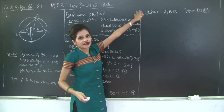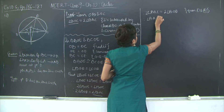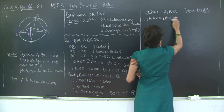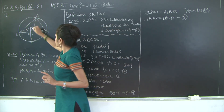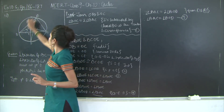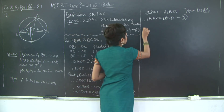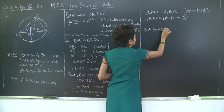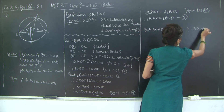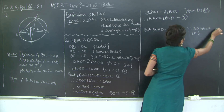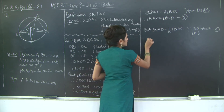Dividing both sides by 2, angle BAC equals angle BOD — statement 5. But angle BAD equals half angle BAC, since AD bisects angle BAC — mark this as statement 6. Therefore, from statements 5 and 6, angle BAD is also equal to half angle BOD.